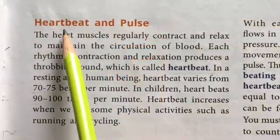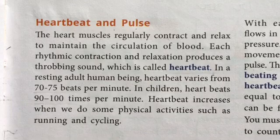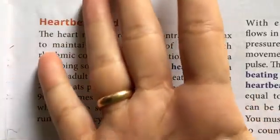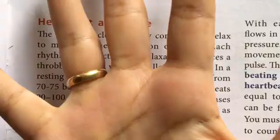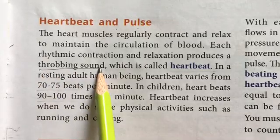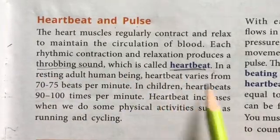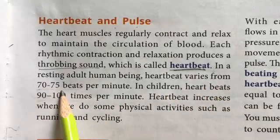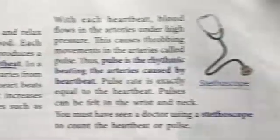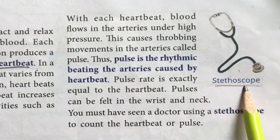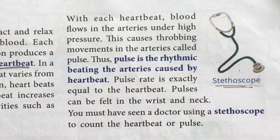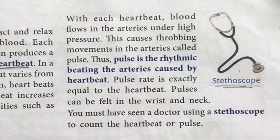Now, what is heartbeat and pulse? The heart undergoes contraction and relaxation — opening and closing. This movement of the heart produces a throbbing sound which is called a heartbeat. In adults it is 70 to 75 beats per minute; in kids it is 90 to 100 beats per minute. We measure the heartbeat using a stethoscope, which you have seen doctors use to check whether the heartbeat is correct.